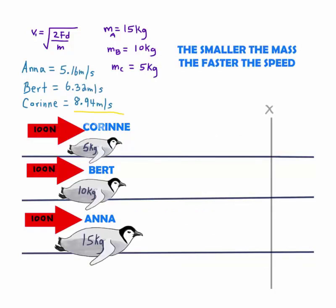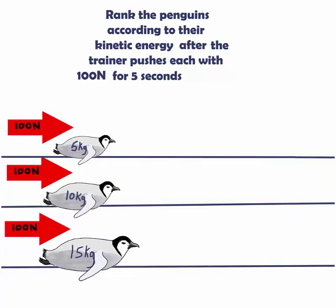Here is the last question. Rank the penguins according to their kinetic energy after the trainer has pushed each with 100 N for 5 seconds. This question is different than the first part. Because now we involve time instead of distance.